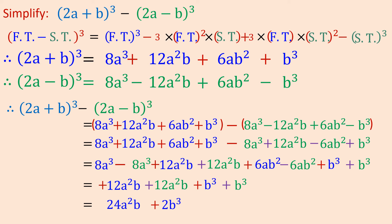So 8a³ minus 8a³ becomes zero. Then 12a²b plus 12a²b — they have the same sign, so they do not cancel and both come down. Plus 6ab² minus 6ab² will cancel out. Then plus b³ and plus b³ — they also have the same sign, so both come down. The blue and green 12a²b terms add together, and the blue and green b³ terms add together.